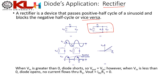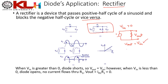Analyzing the rectifier circuit: when V_in > 0, the diode is forward biased. In the forward-biased equivalent circuit, V_out = V_in because the two parallel elements have the same potential. When V_in < 0, the anode is at a lower potential than the cathode, so the diode is reverse biased.